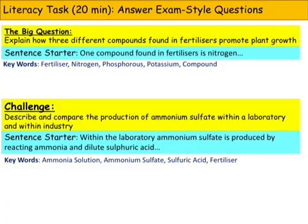Here are two sample examination-style questions. The first — our big question for this tutorial — is how three different compounds found in fertilisers promote plant growth. The second, a more challenging question, is to describe and compare the production of ammonium sulfate within a lab and within industry. Pause the video now and attempt these two questions.